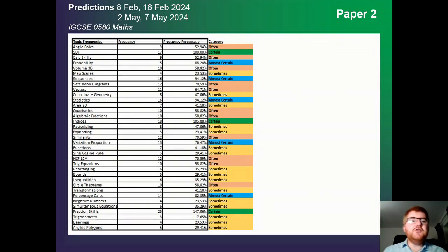Now if you're interested in any of the other topics I haven't mentioned so far, you can see all the percentages here. And I've put them into a category of either often, certain, almost certain, or sometimes. This gives you more detail. Notice there are some topics like sets and Venn diagrams, for example, at 70.59% that I have not mentioned, even though it comes up quite often. So making sure you're revising these often topics is the key to success on this paper.